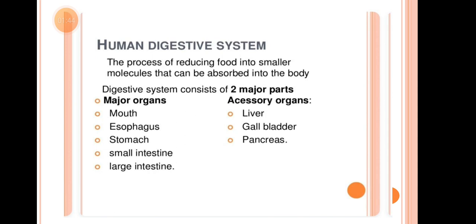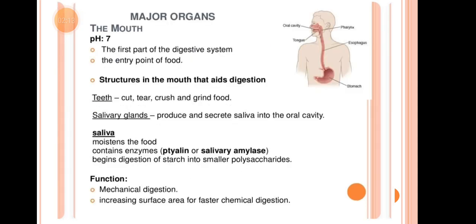The accessory organs are Liver, Gallbladder, and Pancreas. They are called accessory organs because without them our food digestion process would be incomplete — absorption and division of molecules cannot happen without them.